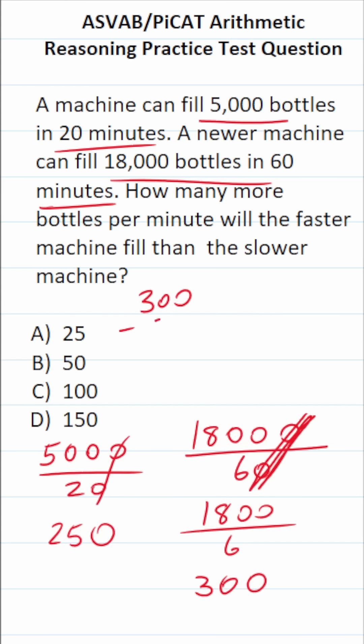Well, it's going to be 300 minus 250. So the answer to this one is B, 50 more bottles per minute.